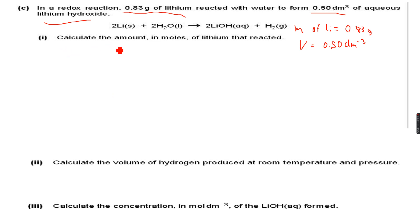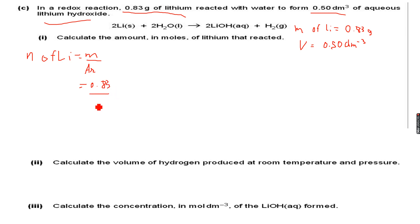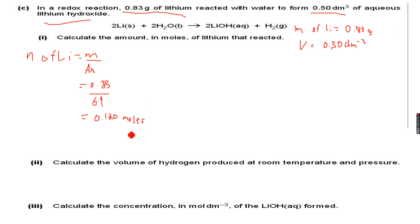The first part asks us to calculate the amount in moles of lithium that reacted. The formula is: n = given mass / relative atomic mass. The given mass is 0.83 g, and the atomic mass of lithium from the periodic table is 6.9. So n = 0.83 / 6.9 = 0.120 moles, correct to three significant figures.